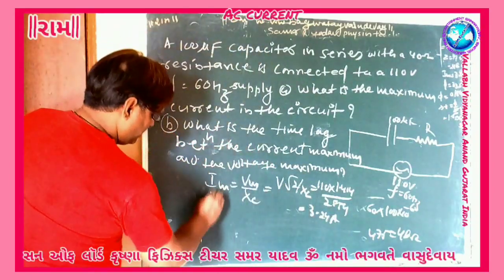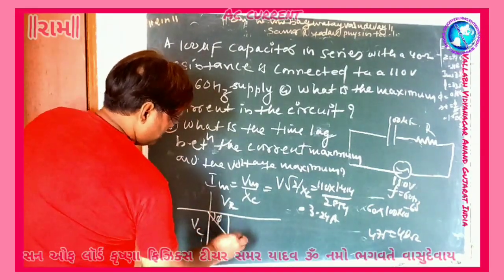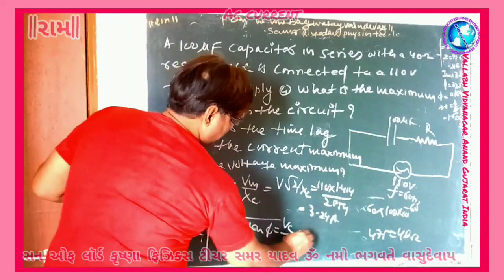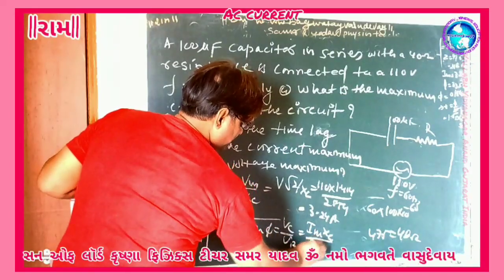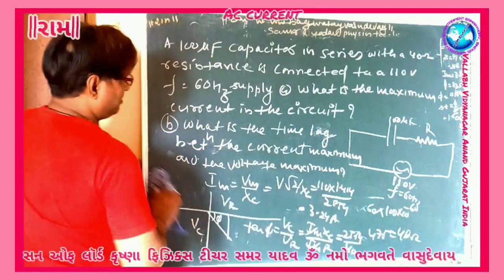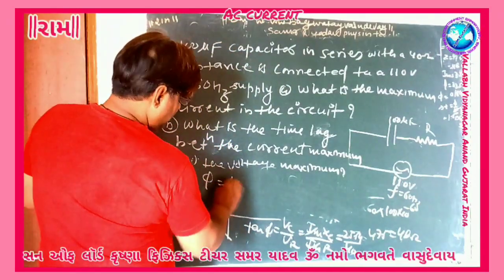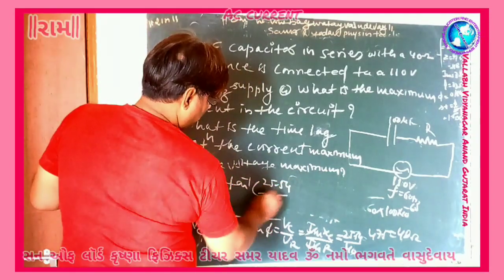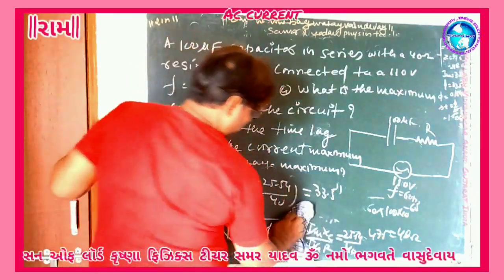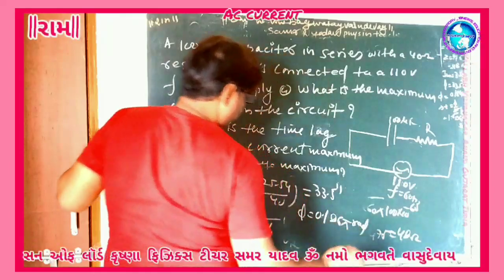Now for the phase angle, looking at the voltage diagram: we have Vc and Vr, with angle phi. So tangent phi is equal to Vc upon Vr, keeping the values: IM times Xc upon IM times R — IM cancels — so Xc = 25.54 upon R = 40. Solving this, phi equals tangent inverse of 25.54 upon 40, giving phi = 33.5 degrees, which equals 0.186 pi radians.